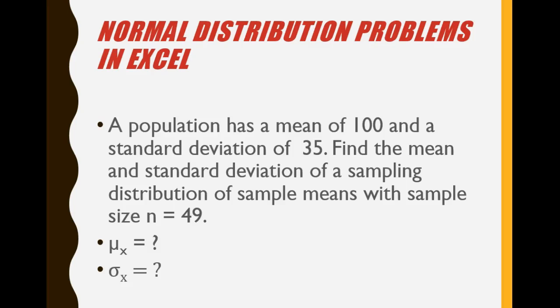Let's take a look at a problem where I'm gonna have to shake my jar full of dice and marbles. A population has a mean of 100 and a standard deviation of 35. Find the mean and standard deviation of a sampling distribution of sample means with a sample size of 49.